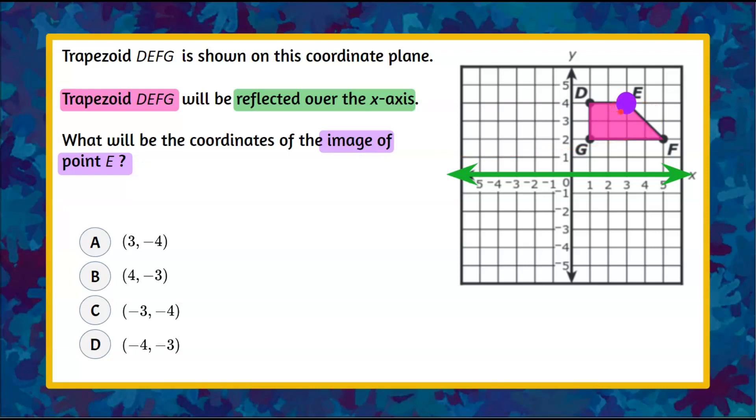So really, all we need to do to answer this question is reflect point E over the x-axis. When we reflect any point, we're going to go the same units that we are above the x-axis. We're going to go that many units below the x-axis.